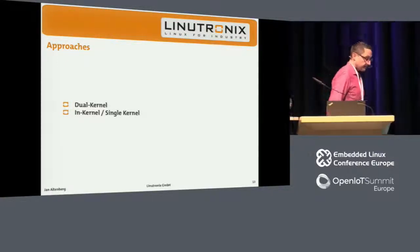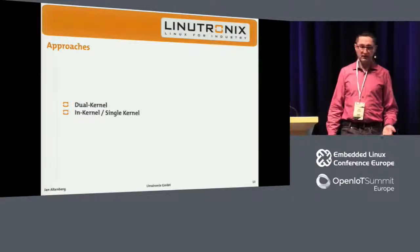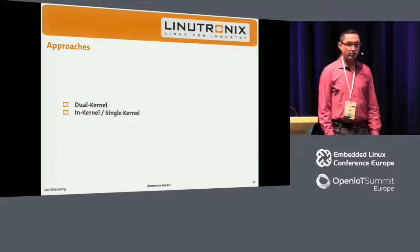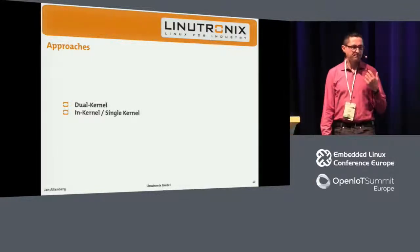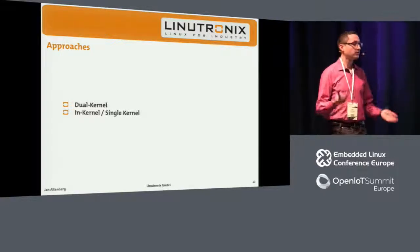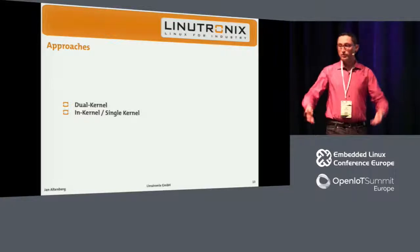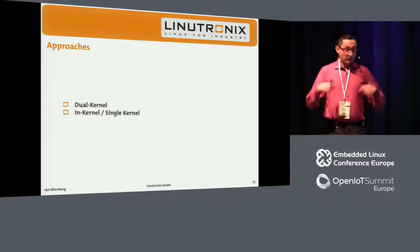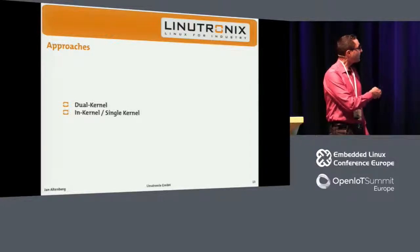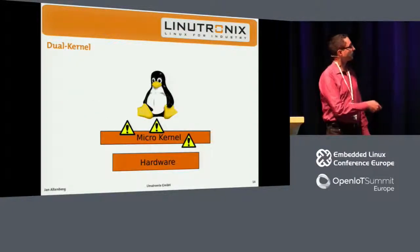Traditionally, we have two approaches to make Linux real-time capable. The oldest approaches are the so-called dual-kernel approaches, which are basically not doing real-time in Linux — it's like having real-time and Linux on the same system. These guys just introduce a micro-kernel which does the real-time. The other idea is to find a way to make Linux itself real-time capable.